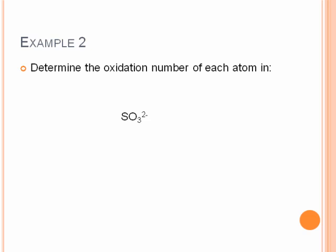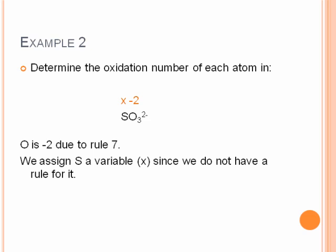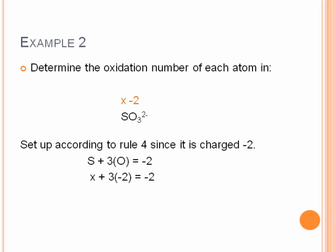Let's look at SO₃²⁻, the sulfite ion, and find the oxidation number of each atom. By rule seven, oxygen is negative two. We assign sulfur the variable x and set up the equation equal to negative two, since it's a charged polyatomic ion: x + 3(−2) = −2. Solving gives x equals positive four. Again, include the positive sign.